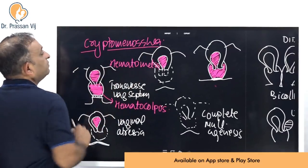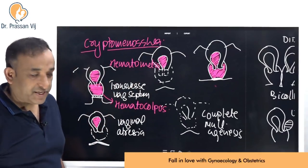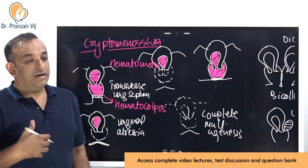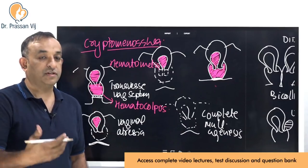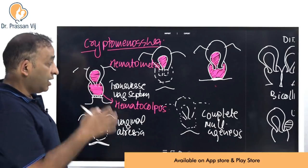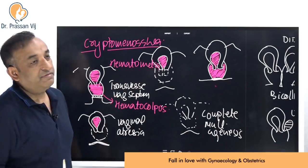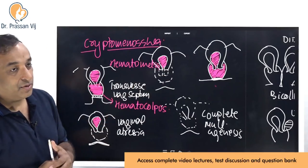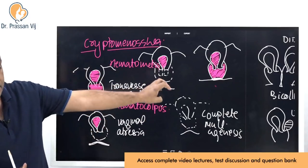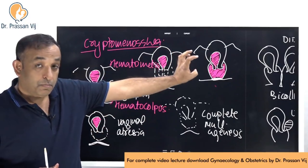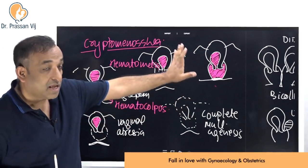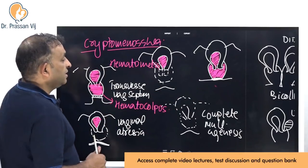MCQ questions often ask: of all Müllerian defects, which shows cryptomenorrhea, or which does not? Imperforate hymen also presents with cryptomenorrhea and may appear as a choice — but remember, imperforate hymen is not a Müllerian defect. The Müllerian defects are the vertical and lateral fusion defects; imperforate hymen is a cannulation defect.